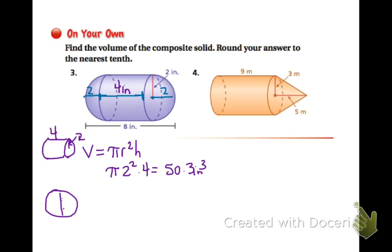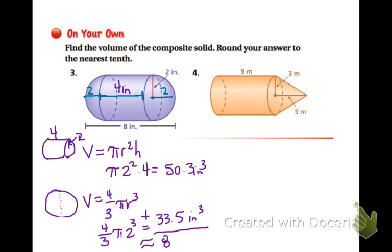And then the next thing that we have is the hemispheres on either side, right? So they kind of form a full circular sphere. So we'll have V is equal to 4/3 π r cubed. And then r in this case is the 2 because it has the same radius. So 2 cubed is 8 times π times 4 divided by 3, and we get 33.5 inches cubed. So the composite would be, when you add the two together, 83.8 inches cubed.